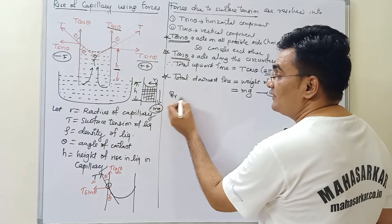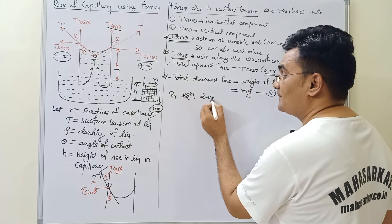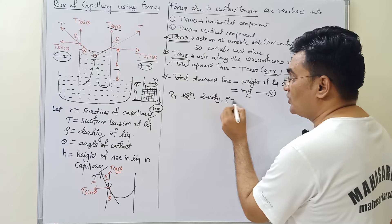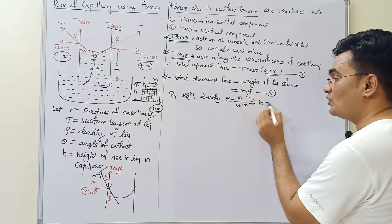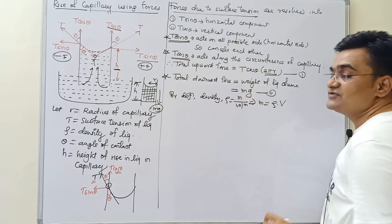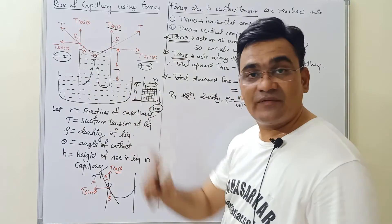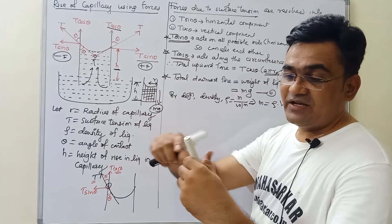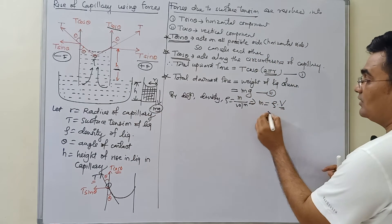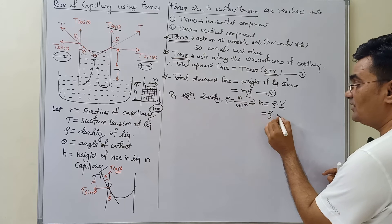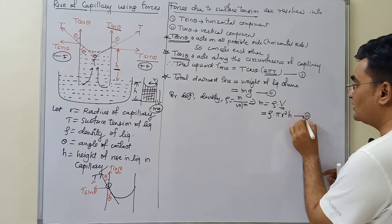By definition, density rho equals mass divided by volume, so mass equals rho × V. The liquid inside the capillary is cylindrical in shape with radius r and height h. Therefore the volume V equals πr²h, giving mass = rho × πr²h. So the total downward force equals rho × πr²h × g.